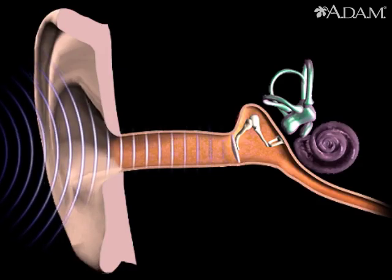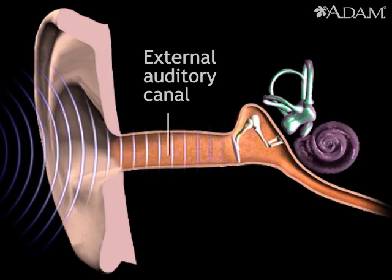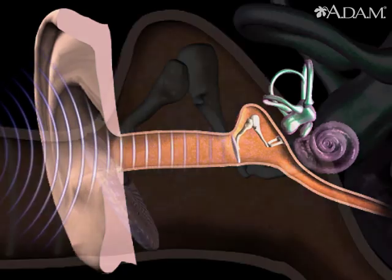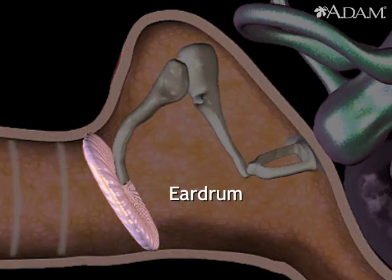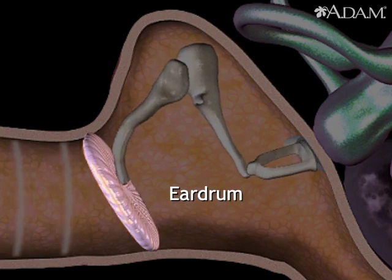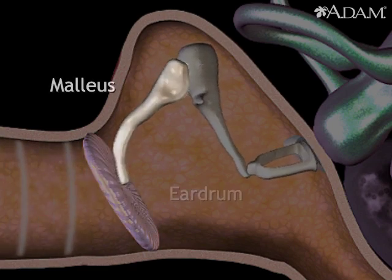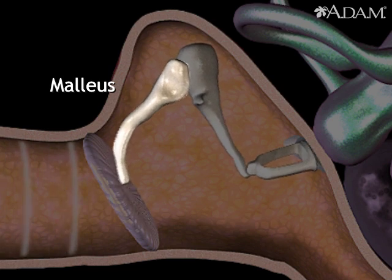Sound waves entering the ear travel through the external auditory canal before striking the eardrum and causing it to vibrate. The eardrum is connected to the malleus, one of three small bones of the middle ear.